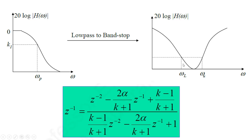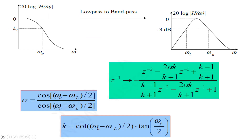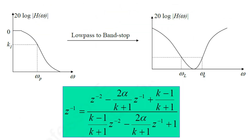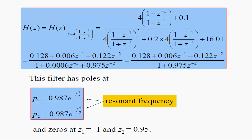In the band-stop filter transformation, ωL is the lower cutoff frequency and ωu is the upper cutoff frequency of the stop band. You replace z^(-1) with the corresponding transformation. These are the digital-to-digital transformations for band-pass, band-stop, low-pass to low-pass, and low-pass to high-pass filter designs.